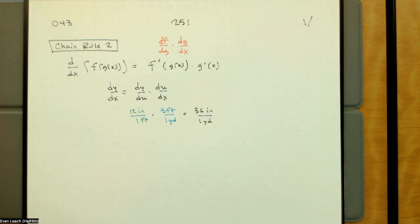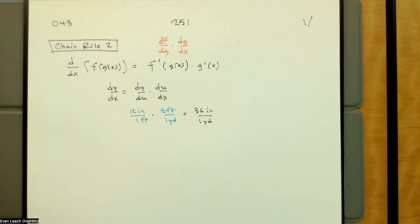Derivatives are rates of change. Slope is rate of change, so derivative is slope. It's in a new context and we call them derivatives and stuff, but we're just modifying the old stuff to deal with the new stuff.